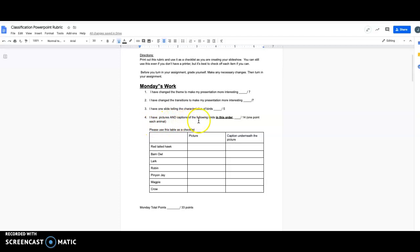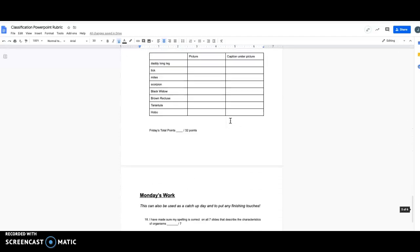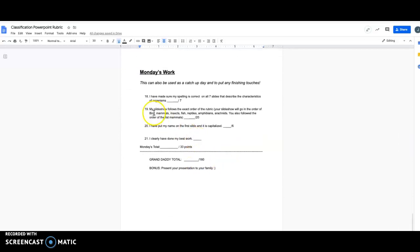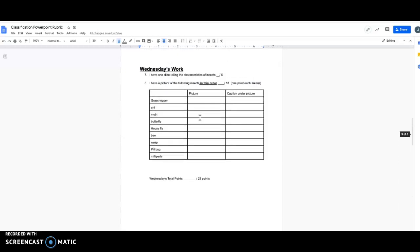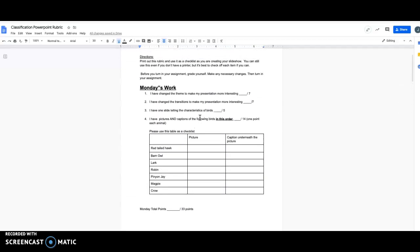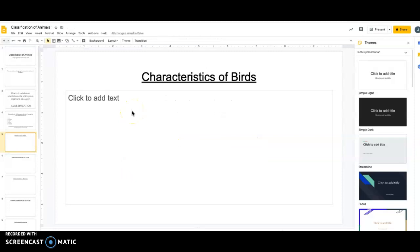Let's move on to number four. I have pictures and captions of the following birds in this order. This is really, really important, in this order. Because, and I'm going to show this to you now so you're aware, you'll notice at the very end, my slideshow follows the exact order of the rubric. That's worth 20 points. So you're really going to want to follow that direction, because if you don't, it's going to be 20 points off of your grade. So what that means is that as you're putting pictures in, you follow this order. So what's the first bird I'm going to put in? Red tailed hawk. Let's do that.